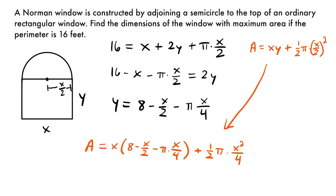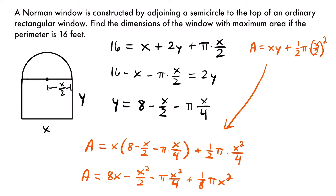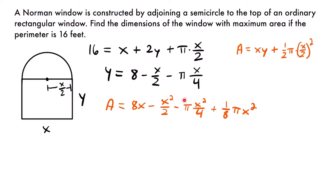Distributing x through the quantity gives: A = 8x − x²/2 − π·x²/4. Then the last term: multiplying (1/2) by (1/4)·π·x² gives (1/8)·π·x². So our simplified area equation is A = 8x − x²/2 − π·x²/4 + (1/8)·π·x². We can now take the derivative and set it equal to zero to solve for x.